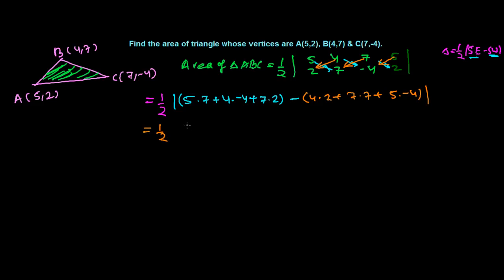So what do we get now? One by two: 5 times 7 that is 35, and then 4 times 4 that will be minus 16, and then 7 times 2 that will be 14. Minus, now 4 times 2 that's going to be 8, 7 times 7 that will be 49, and 5 times minus 4 that will be minus 20.